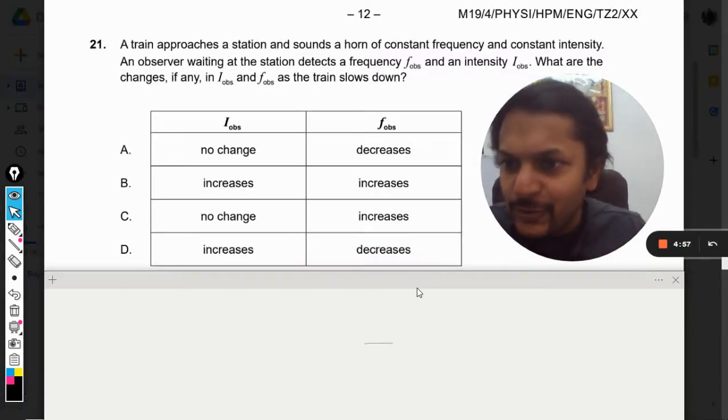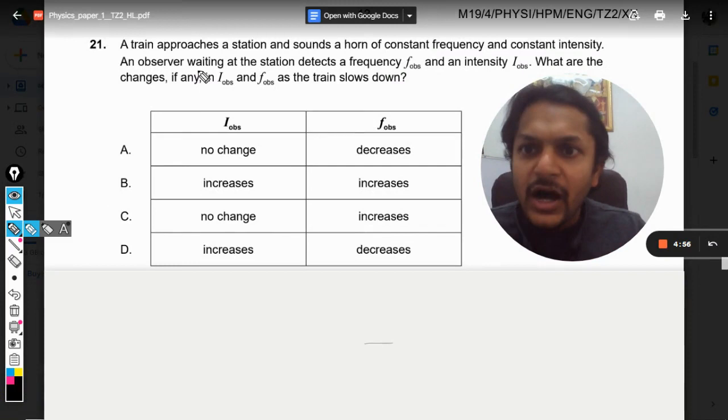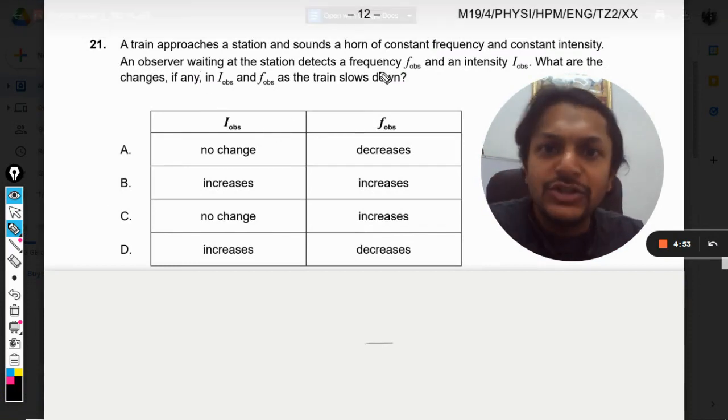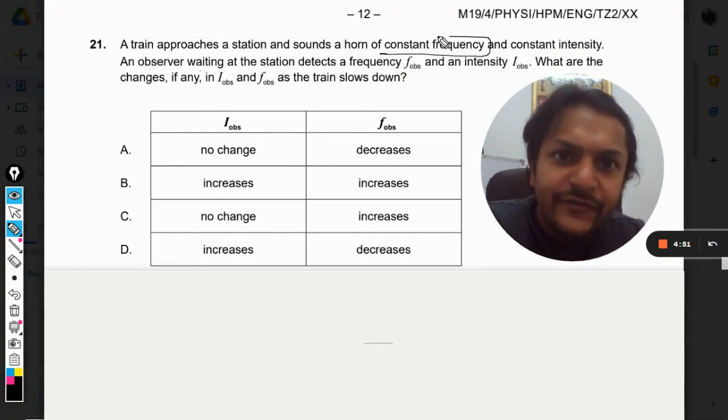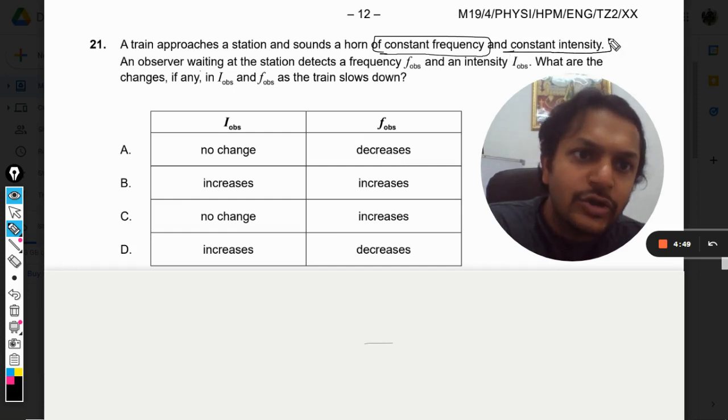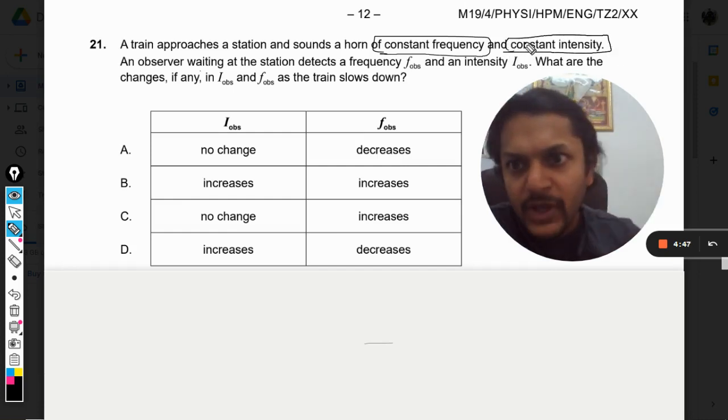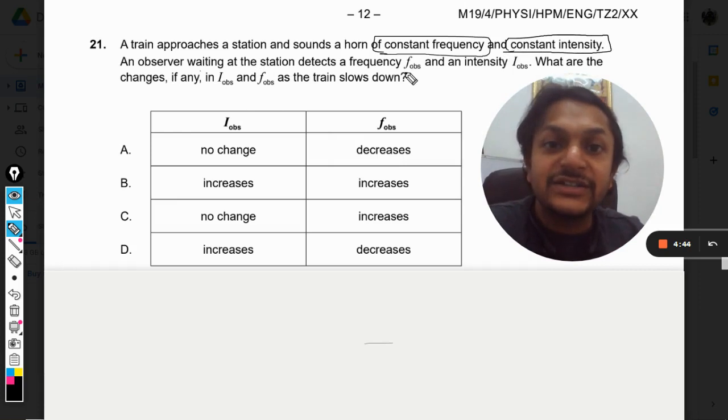Okay dear students, let us see what is in this question. A train approaches a station and sounds a horn of constant frequency f₁ and constant intensity I₁. An observer waiting at the station detects a frequency f_obs and intensity I_obs.